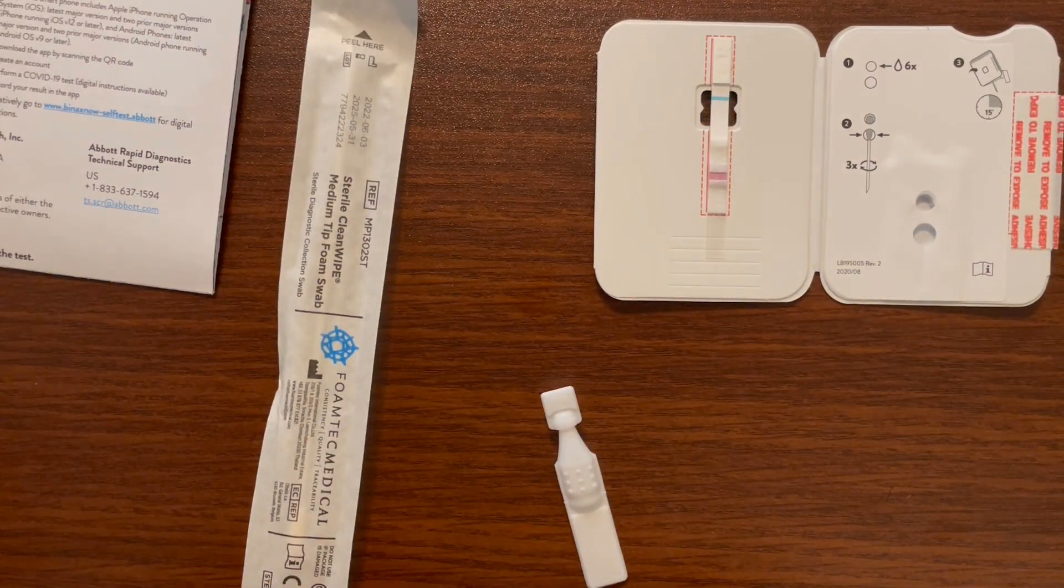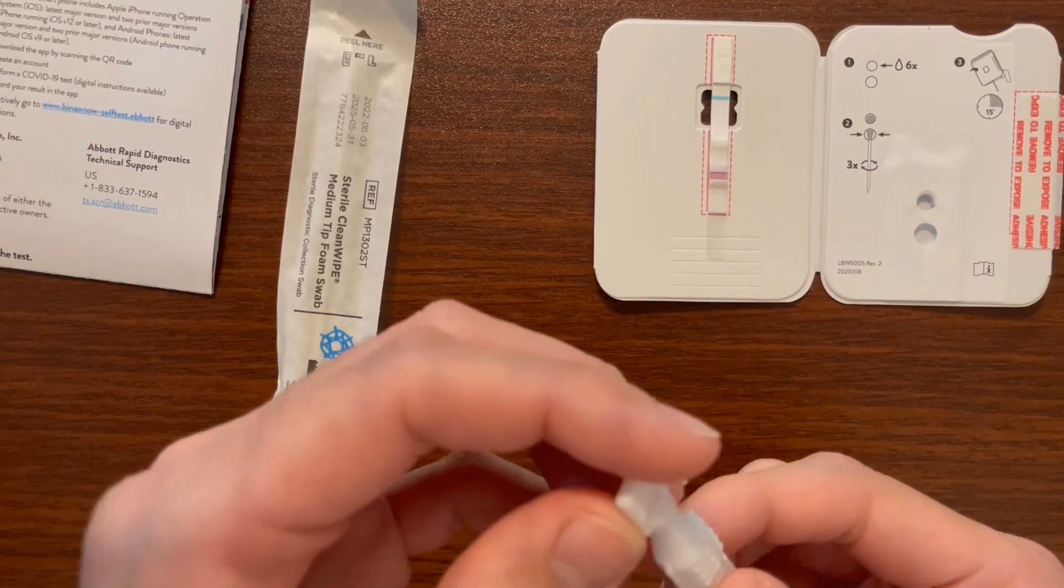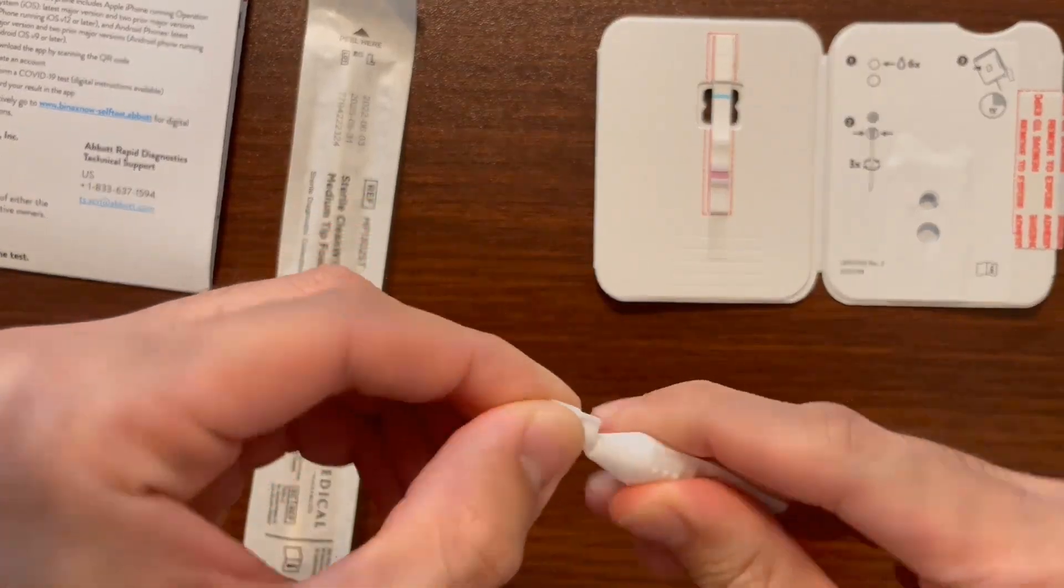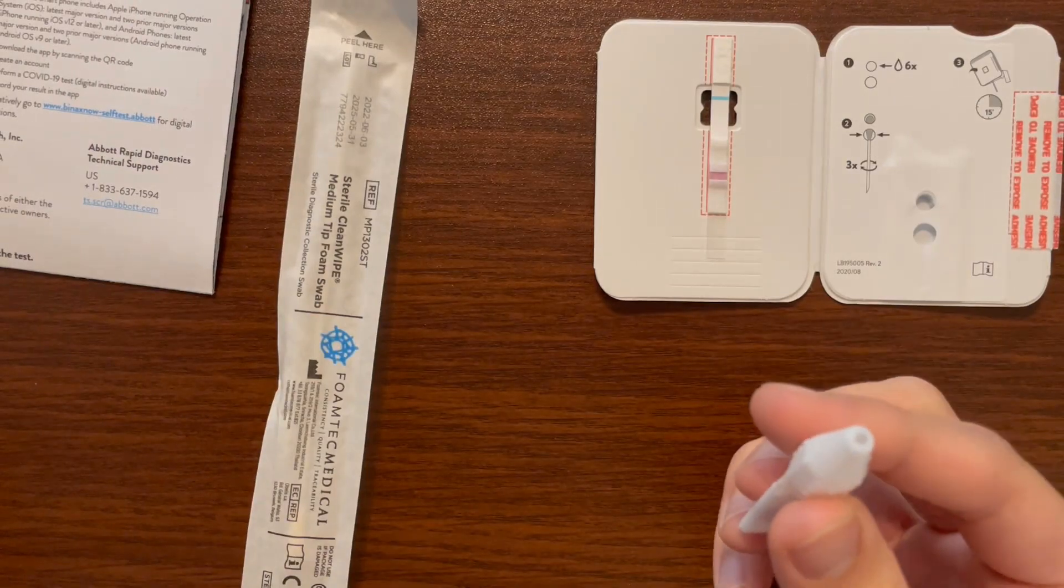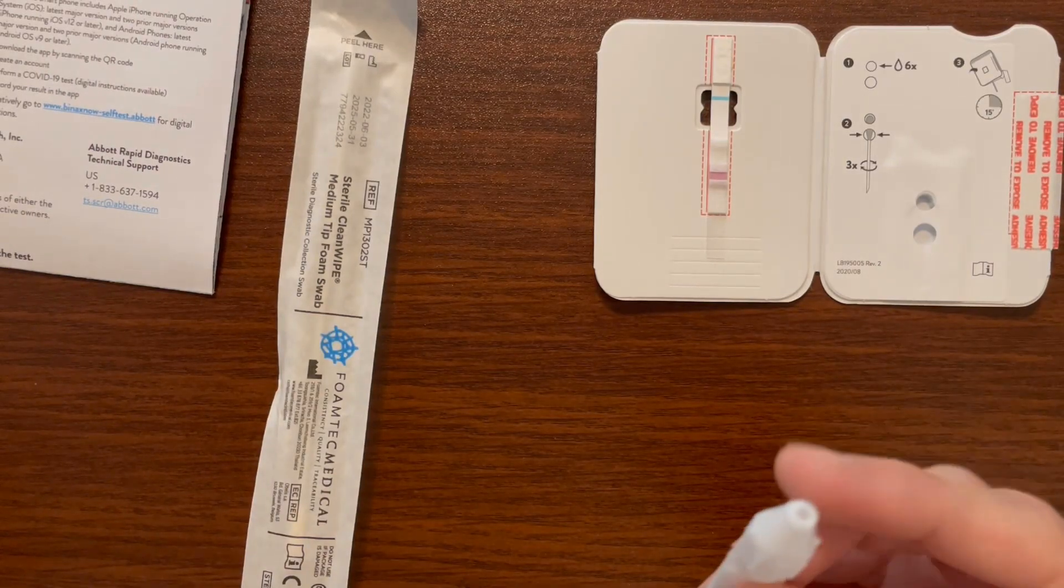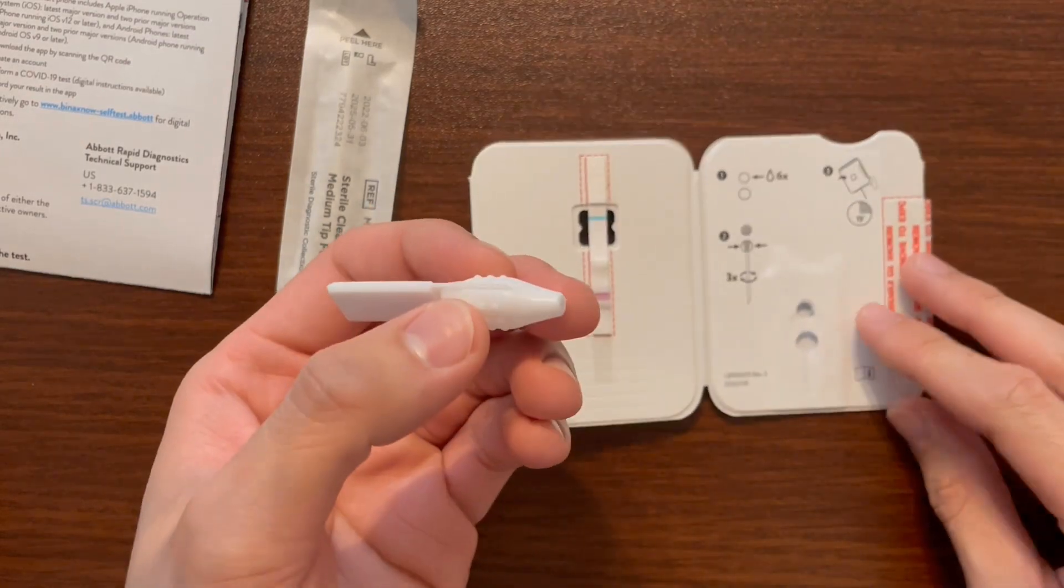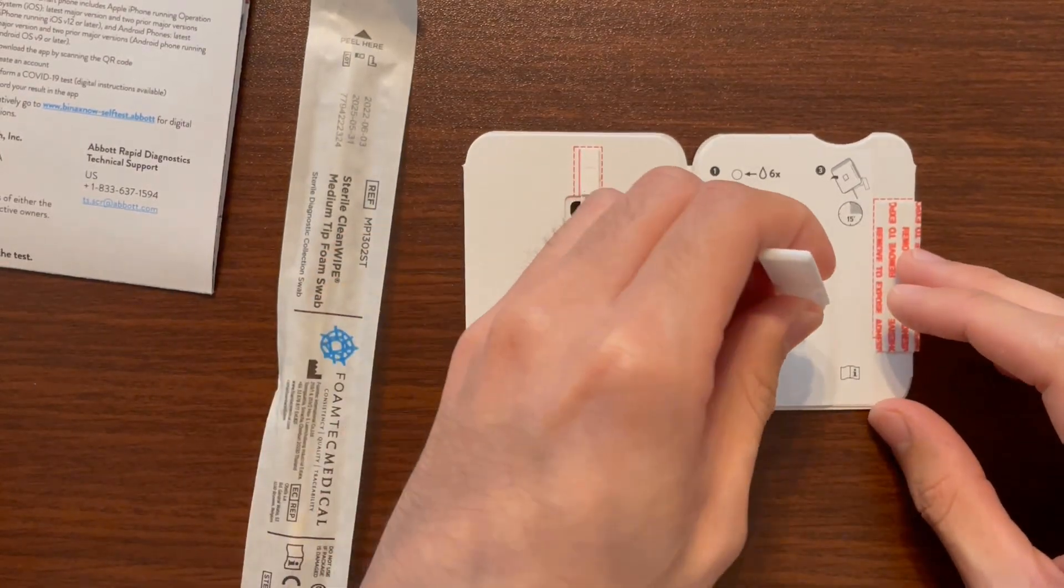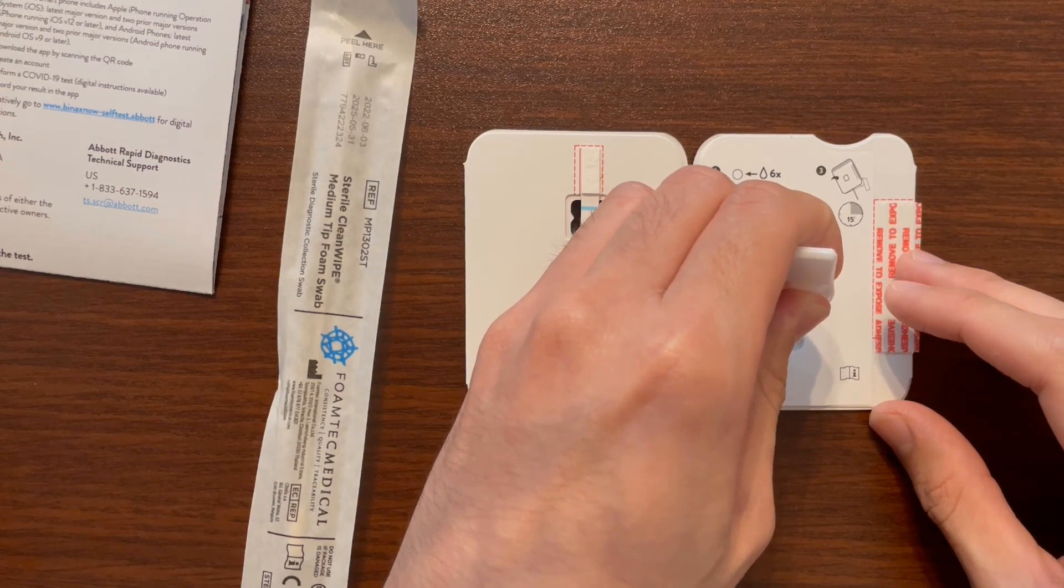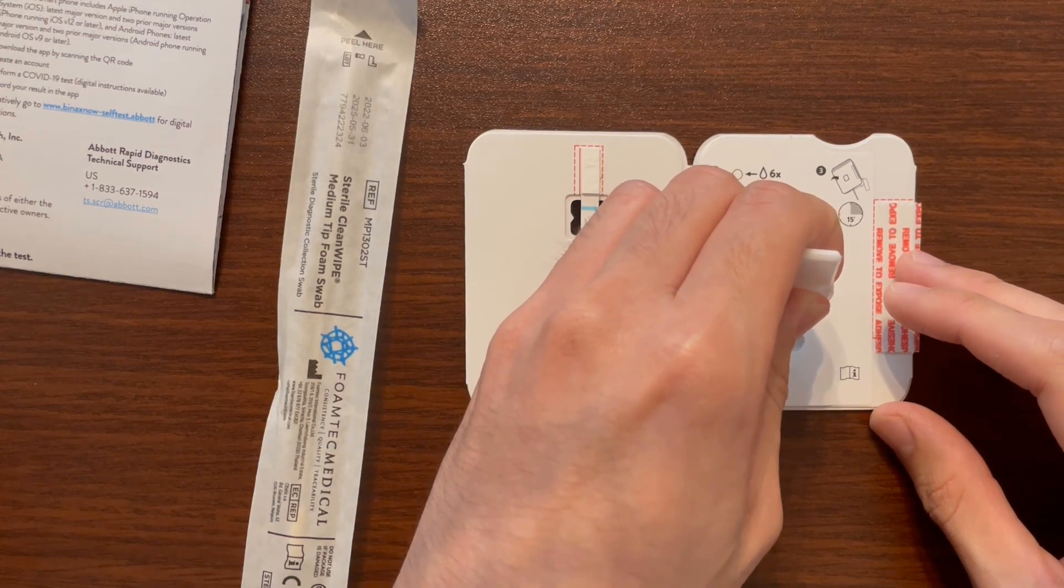Now we're going to take our dropper bottle, just twist the top off like this, and that's how you open the dropper bottle. Then we're going to drop six drops into this top hole. One, two, three, four, five, six.